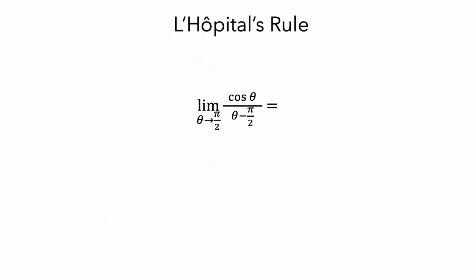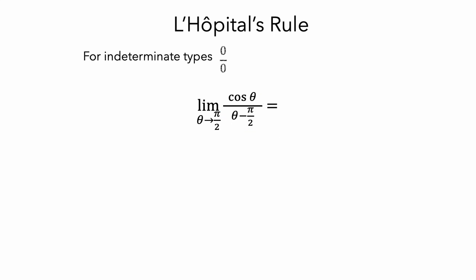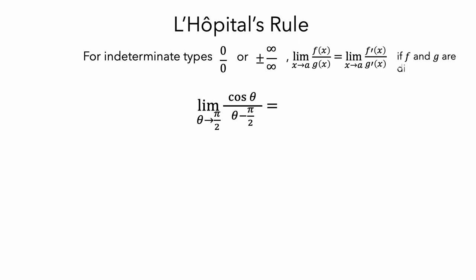You use L'Hôpital's rule whenever you have a limit of a quotient — that is, when you're dividing one function by another — and the quotient appears to approach 0 over 0, or infinity over infinity. Then the limit of the quotient is equal to the limit of the quotient of the derivative of the numerator divided by the derivative of the denominator, provided that both f and g are differentiable and the derivative of g isn't 0.